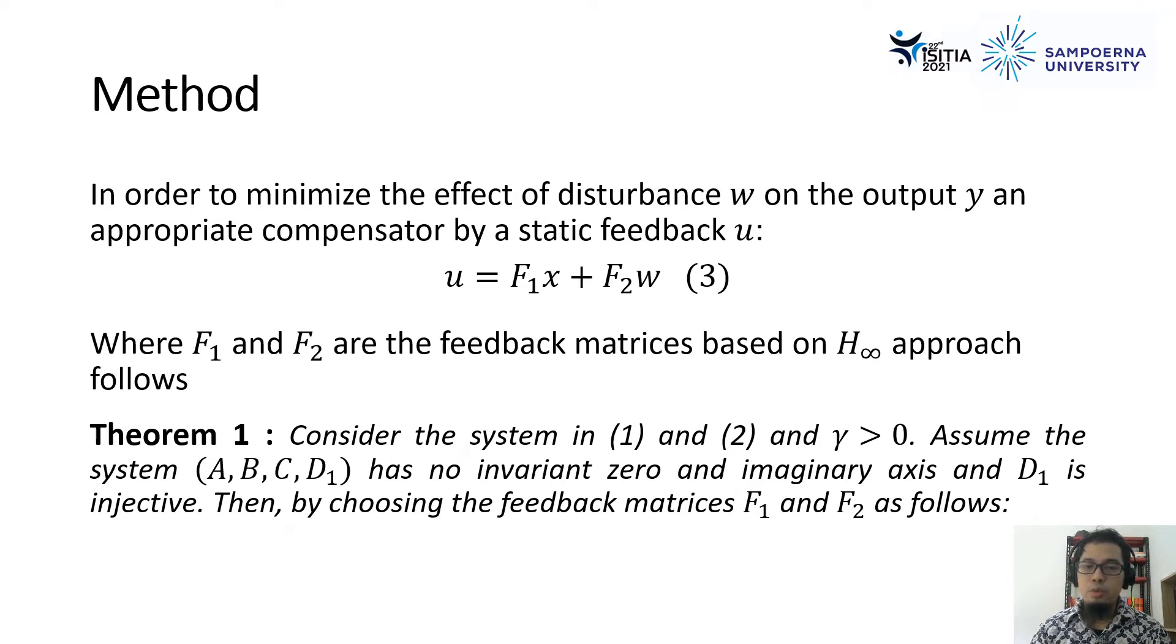Consider the system in one and two and gamma is larger than zero. Assume that the system of A, B, C, and D1 has no invariant zero and imaginary axis and D1 is injective, then by choosing the feedback matrix F1 and F2 as follows.